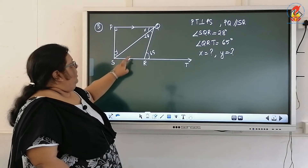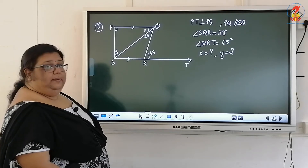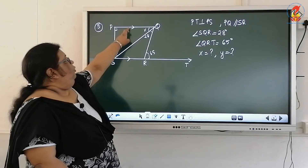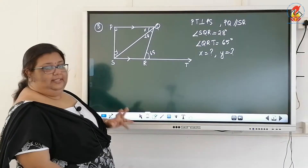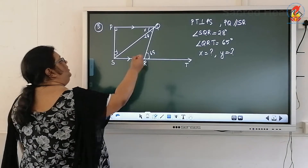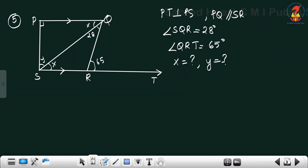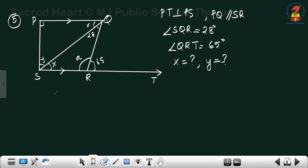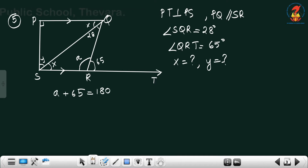PQ is parallel to SR, same as PQ parallel to ST. If two lines are parallel, alternate interior angles will be equal. So if this is angle X, this will also be angle X. Taking a value A here: A plus 65 degrees equals 180 — that is a linear pair. So A equals 180 minus 65.